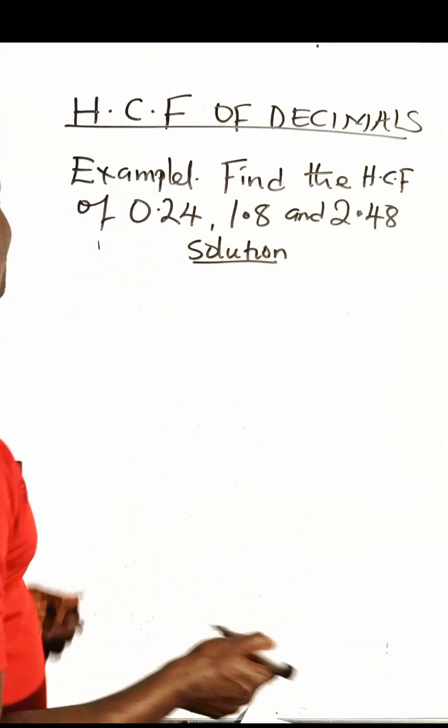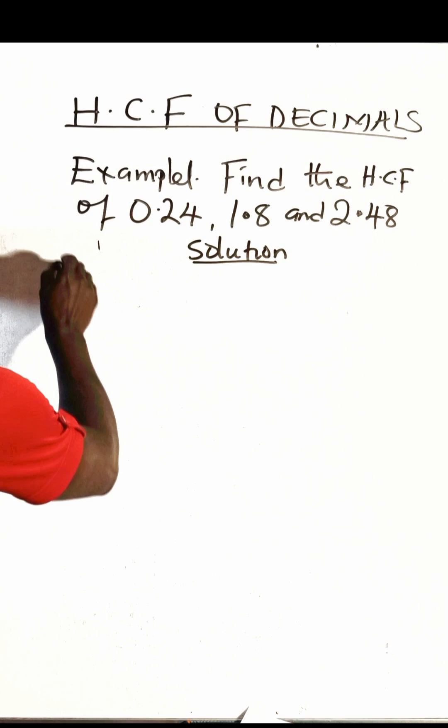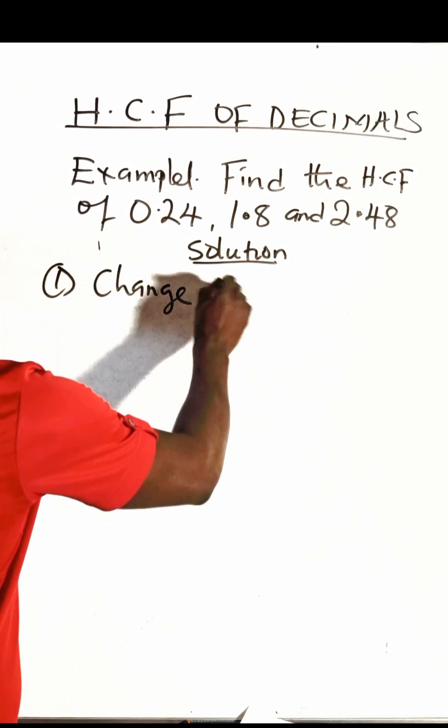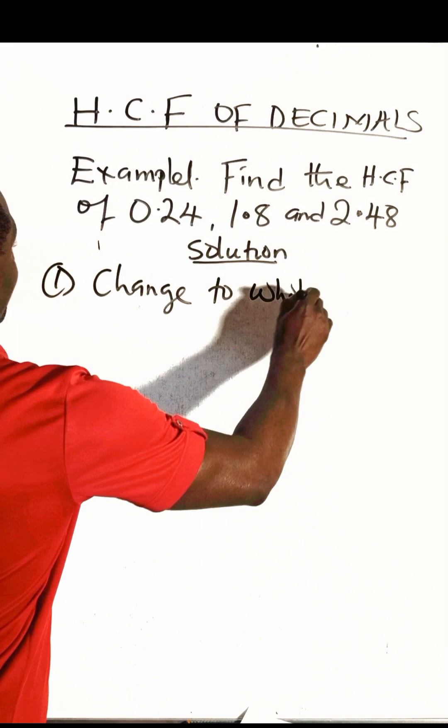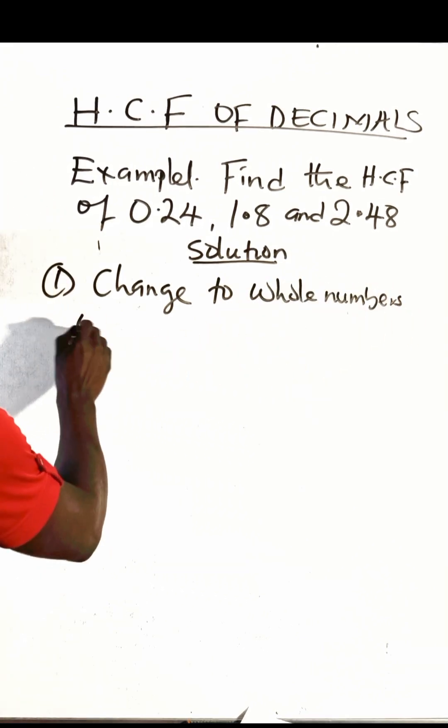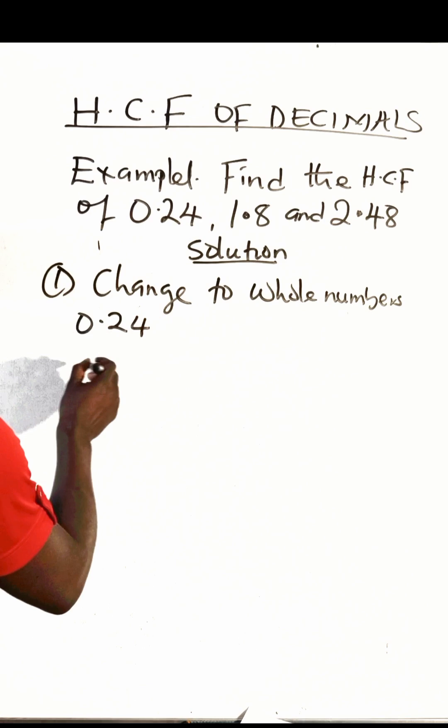Now before we start, the first step is for us to change to whole numbers. Yes, we'll change all our decimals to whole numbers. The first one is 0.24, the second is 1.8, and the third is 2.48.